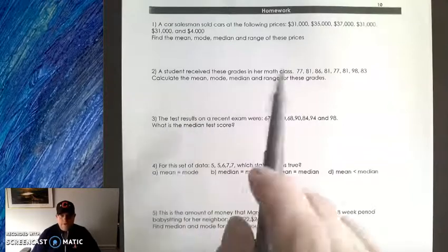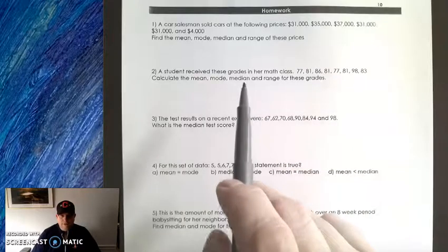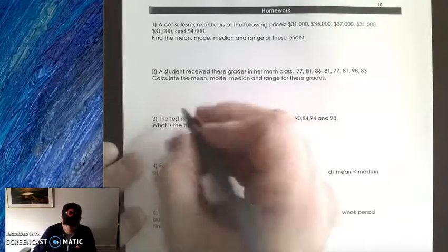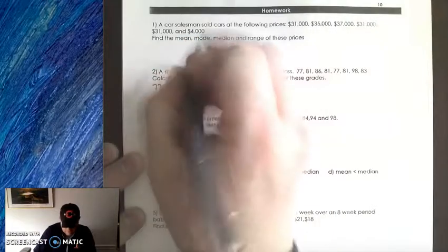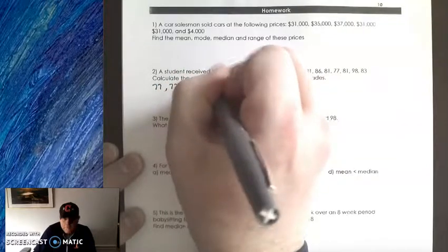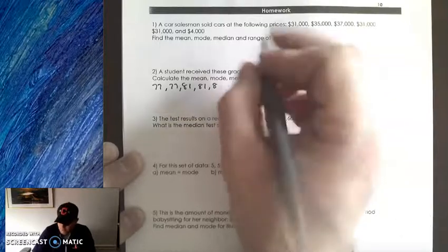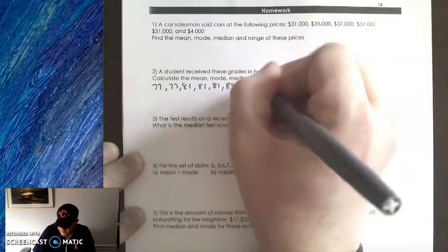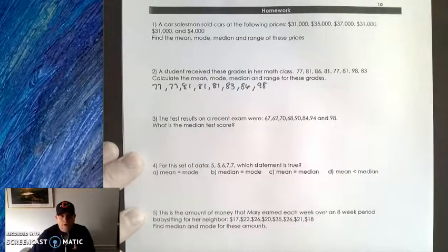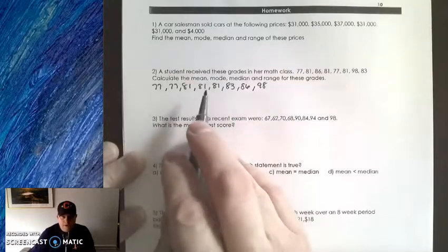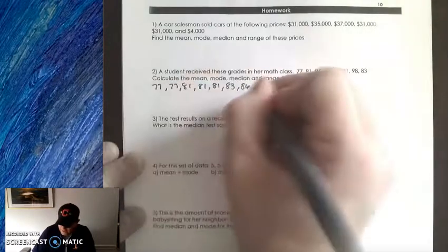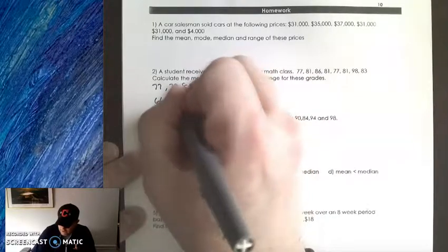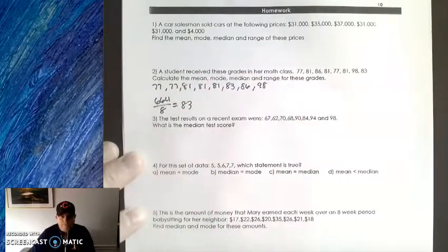The first thing I'm going to do is rearrange these numbers. To find the median, we need to find the middle number, and we need to put these numbers in order. So the first one, 77, 77. There's three 81s. You got to be very careful because a lot of times you might miss a number when you're putting these in order. 83, 86, and 98. The mean is the average, so we're going to add up all these numbers, and when we add it up, it's 664, and we're going to divide it by 8 because there are 8 numbers. 664 divided by 8 is 83.